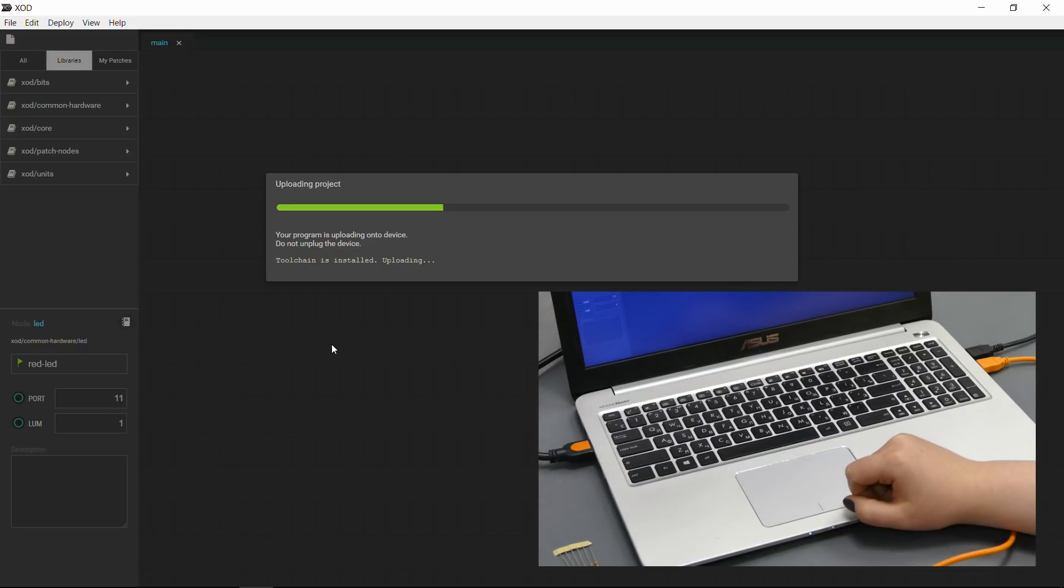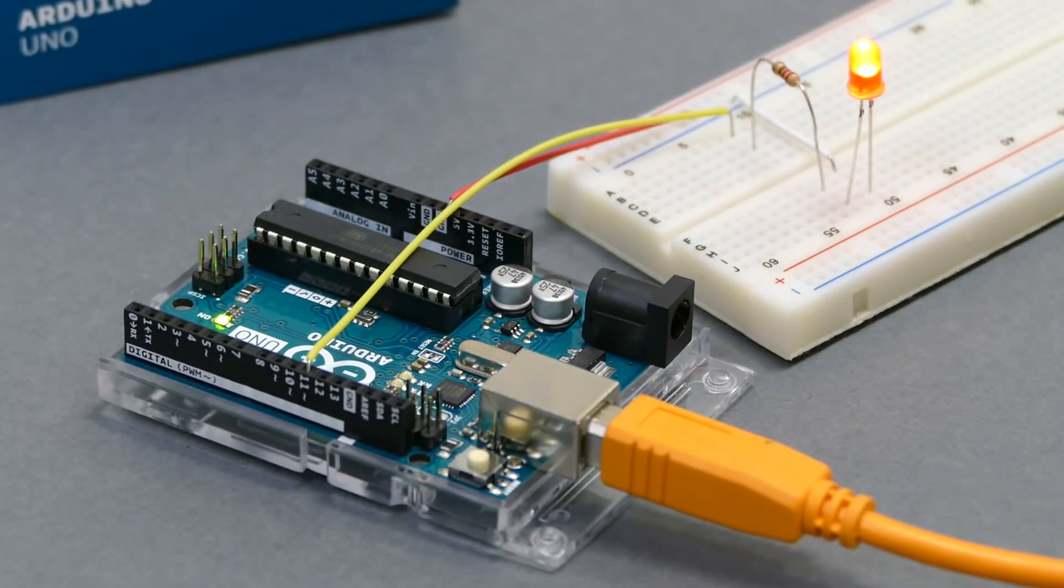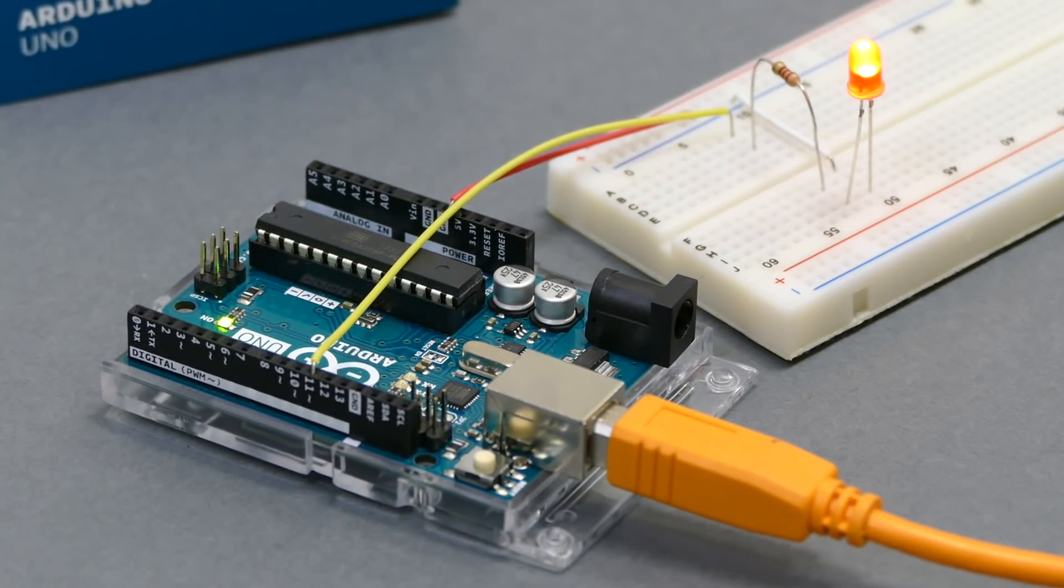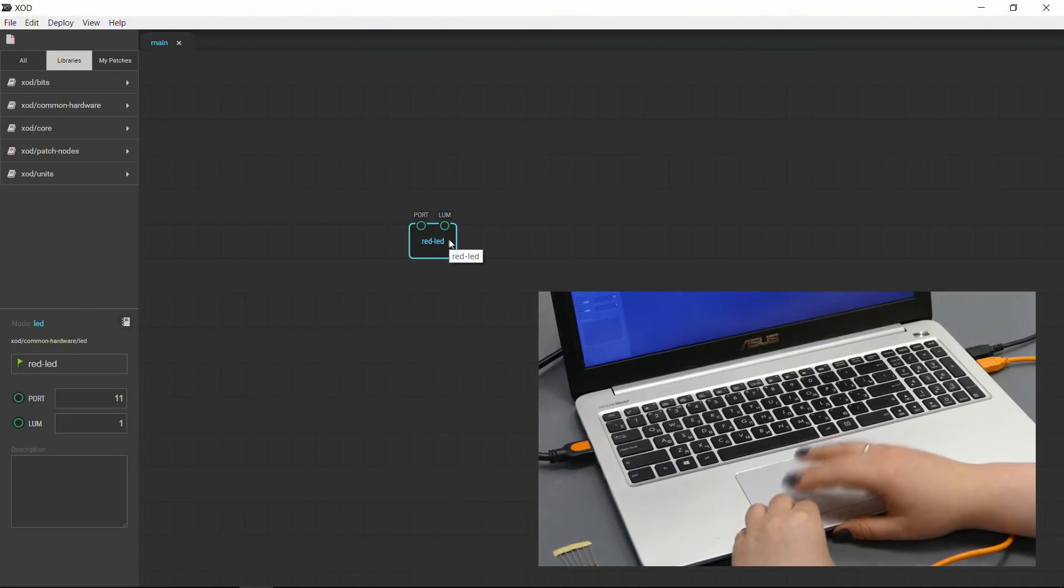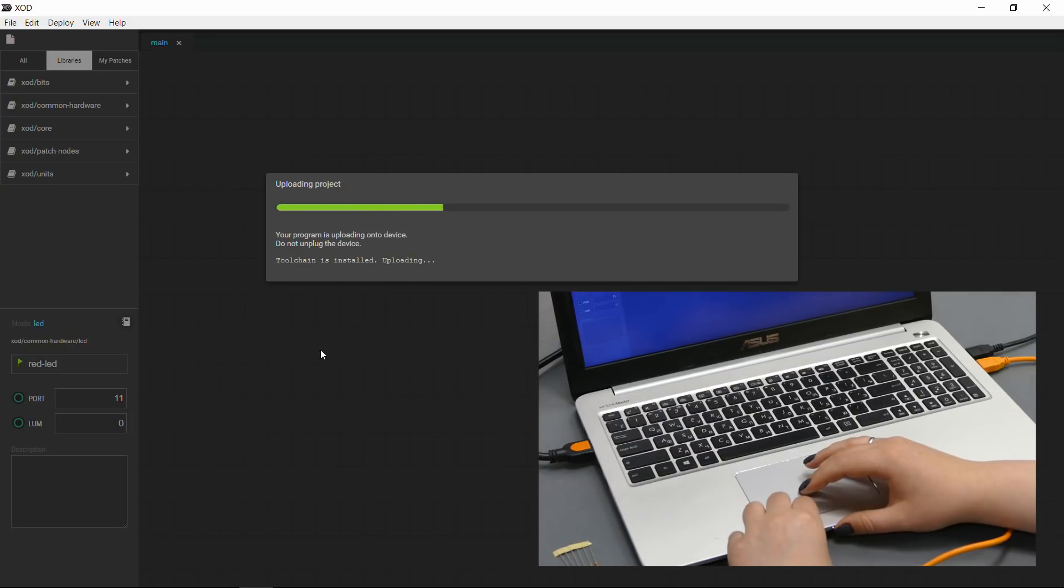You'll see that it shut off and now it's back on. So to further show you that it's working, let's go ahead and shut the LED off. We'll go back into our LED and type in a 0. We'll go ahead and deploy it. And then we will upload. It's gonna shut off and it's gonna stay off.